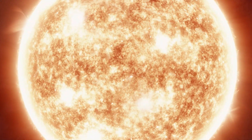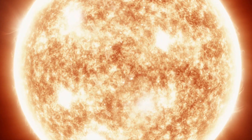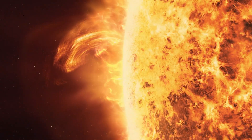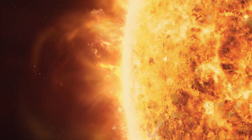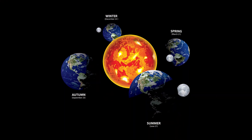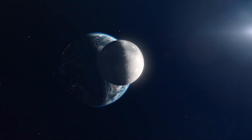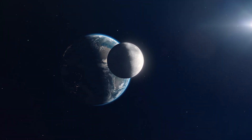Additionally, the Sun exerts an immense gravitational pull, approximately 274 meters per second squared at its surface, which affects both Earth's and the Moon's orbits, playing a pivotal role in the complex interactions of these celestial bodies.